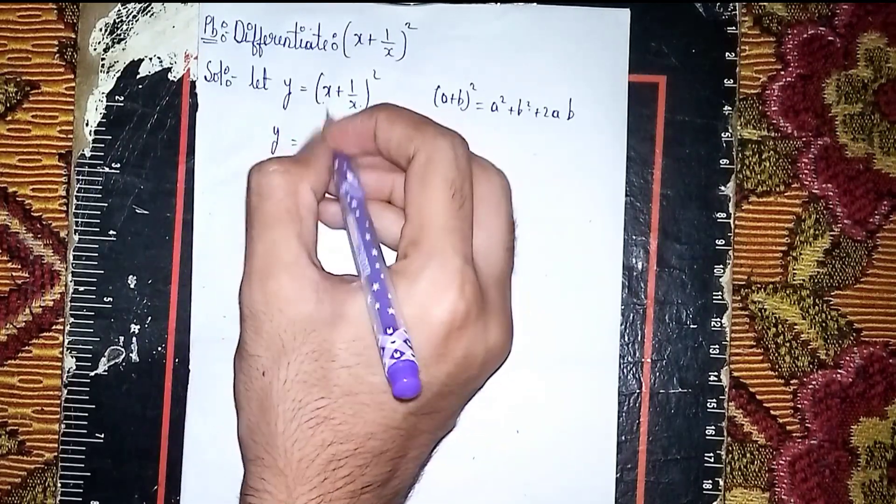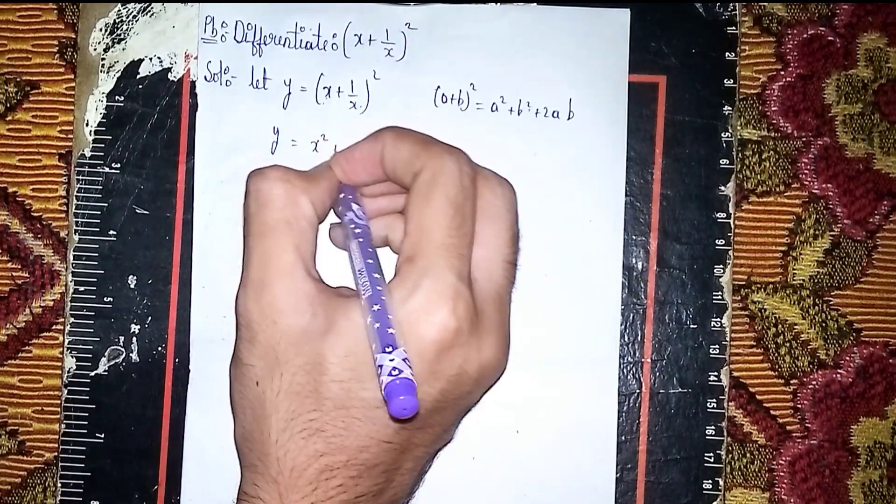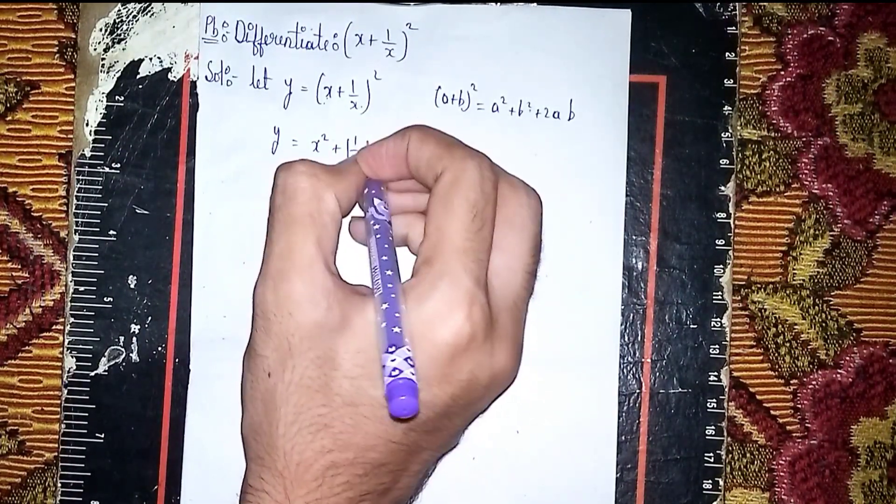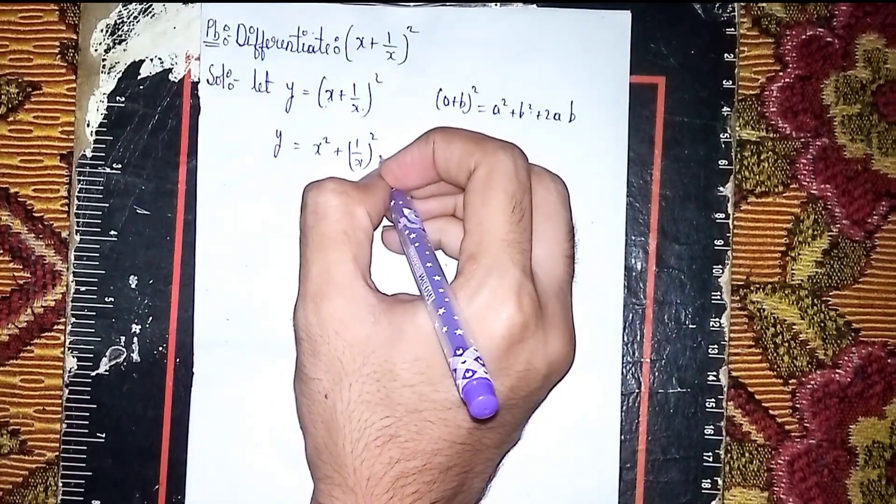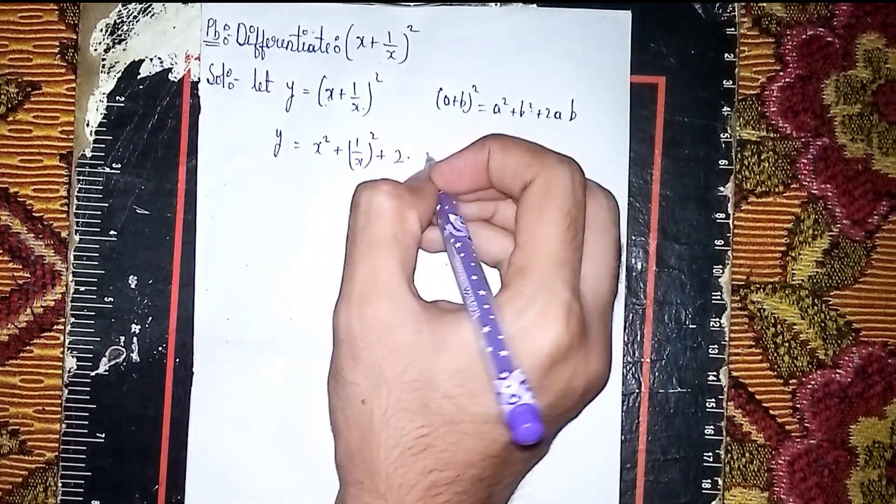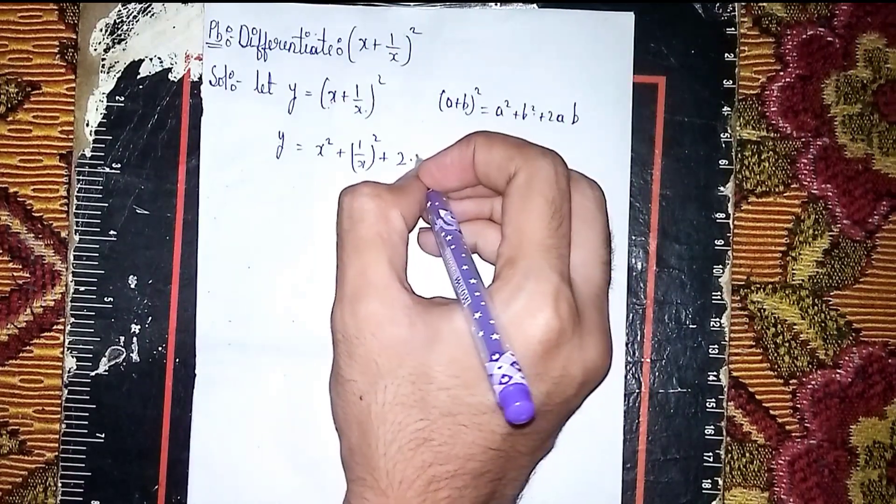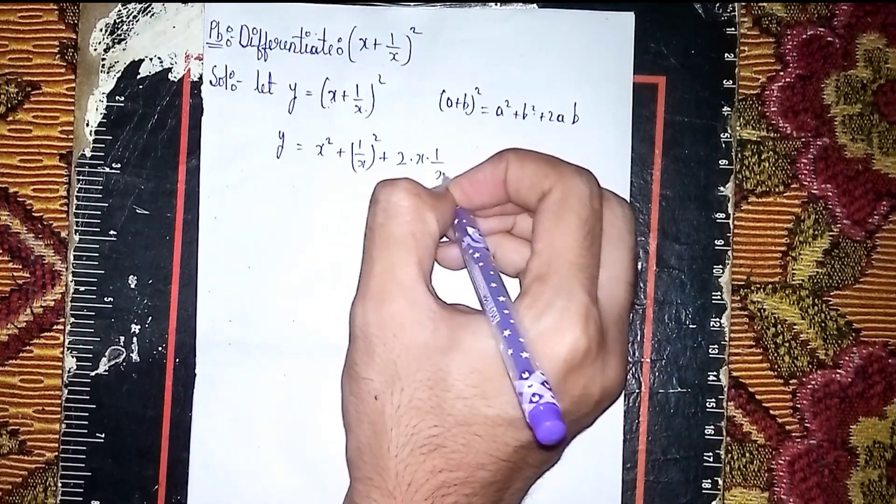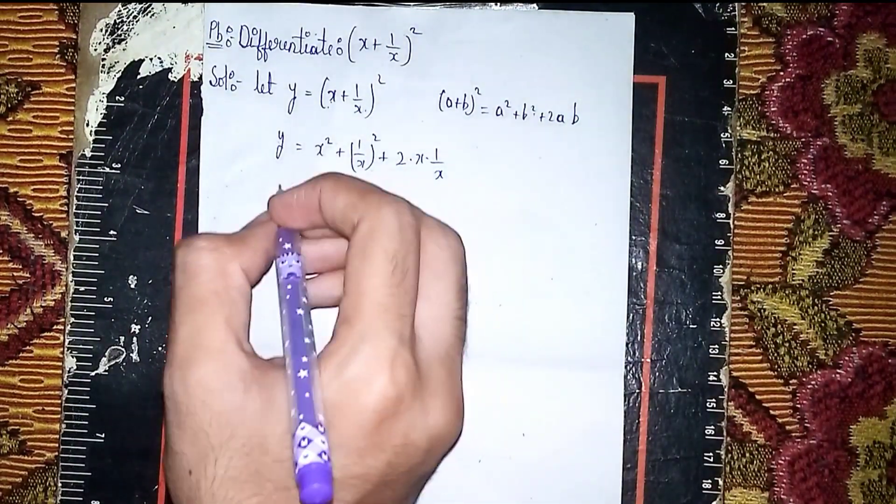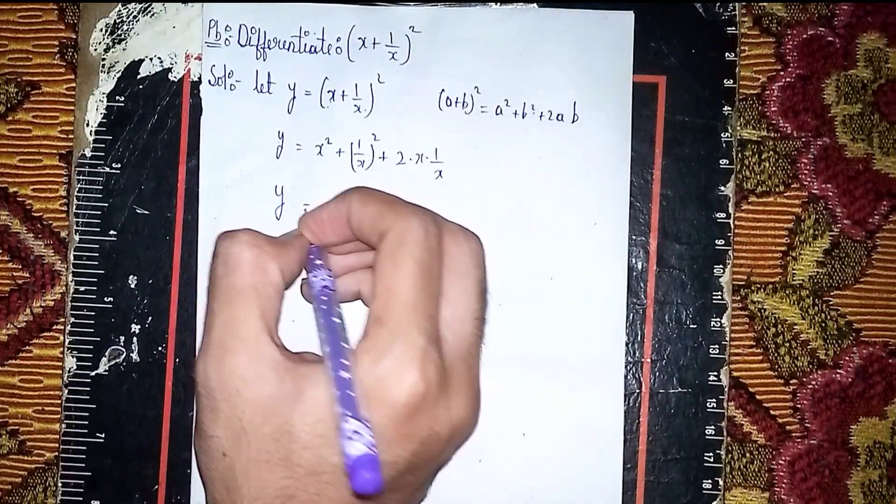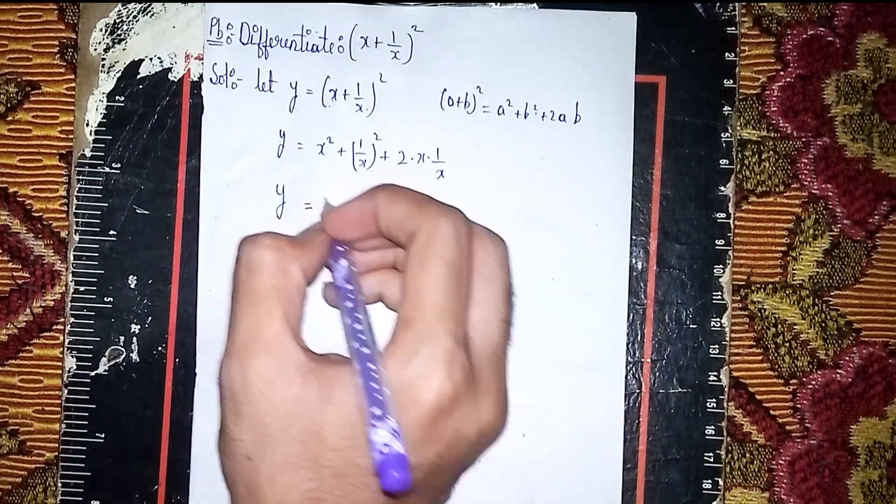So y is equal to x² plus (1/x)² then plus 2 times x times 1/x.